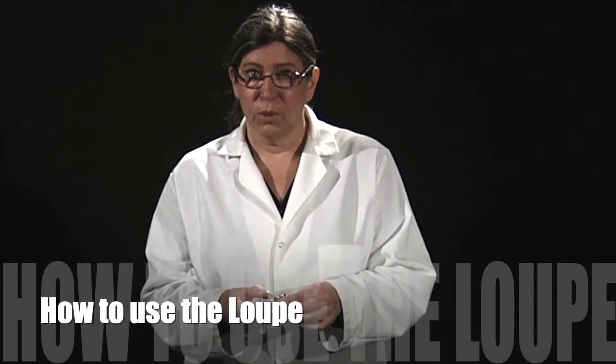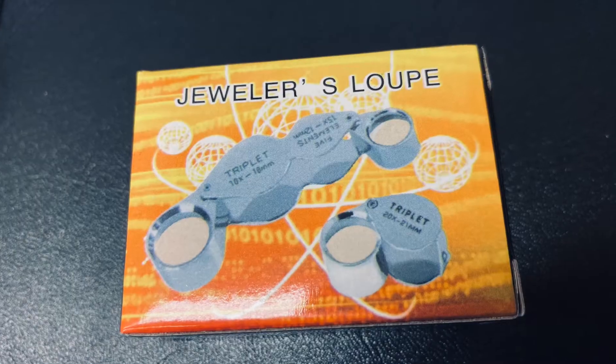So how do you use a jeweler's loop or a magnifying glass? There's a couple of different ways that people use them and when you're young you're probably taught that you hold whatever object you're looking at. In this case I'm just going to look at the loop box that it came in and I'm going to do what people normally do which is they hold it kind of a little bit far away from their face.